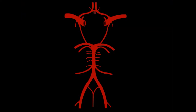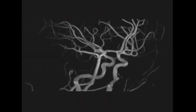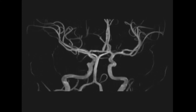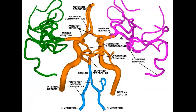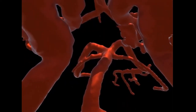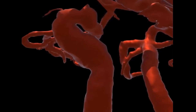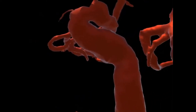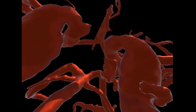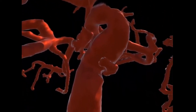In our last session we reviewed anterior circulation and followed the internal carotid from its origin in the neck until its bifurcation into the ACA and MCA, seeing everything along its course. We briefly looked at what MCA and ACA territory look like. Today I'm going to ask you to shrink down your perspective so we can travel through posterior circulation. But first let's quickly review the main elements of anterior circulation and some basic anatomy, because we're going to be jumping around in terms of perspectives today.